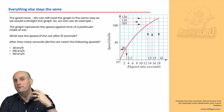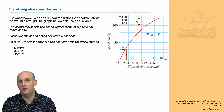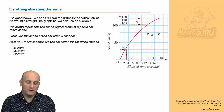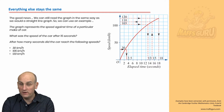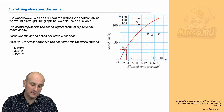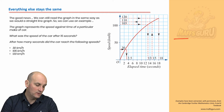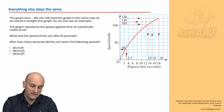Everything else from now on stays the same as it has done in our very first video on line segment graphs — very much the same. If you are given a graph, the chances are you're either going to read off some values or you're going to interpret it in some way. The graph currently shown has a question: the graph represents the speed against time of a particular make of car, and it says, what was the speed of the car after 15 seconds?